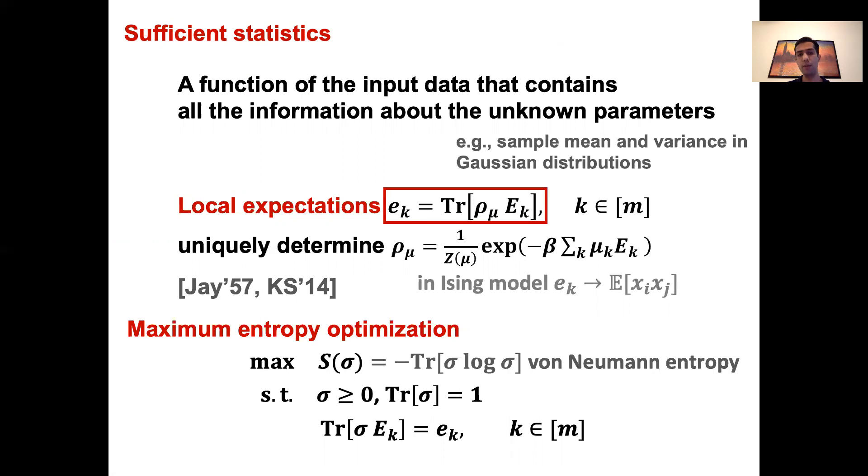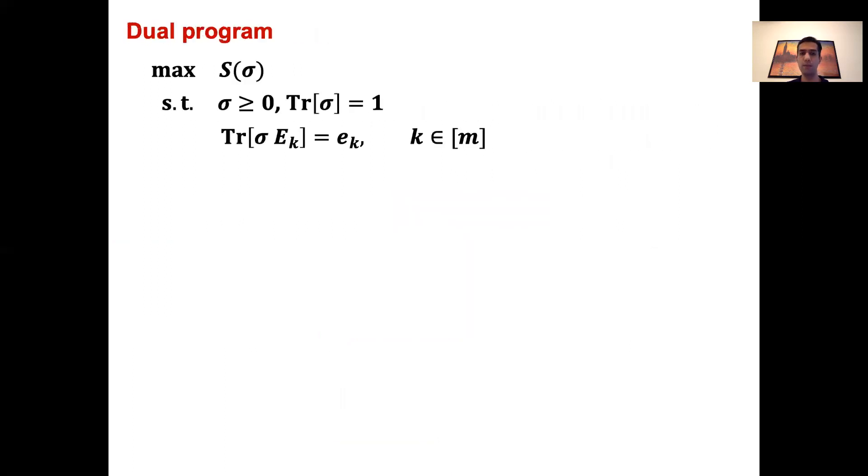The issue, however, with this solution is that since we only have some finite number of copies of the Gibbs state, the local expectations e_k are not known exactly. And we only have their estimated value e-hat_k, which involves some statistical error. And so the important issue that remains is to show that this approach is robust to such statistical errors.